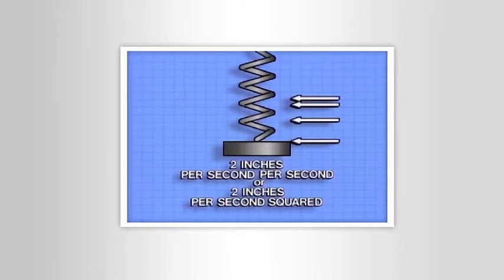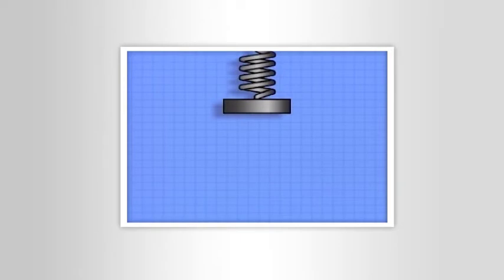Suppose the block travels downward from point A to point B. As it moves, its speed increases or accelerates. So let's say that in the first second, the block travels two inches.